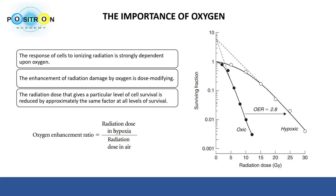As you can see in this graph, there is a plot between surviving fraction and radiation dose. For hypoxic cells the curve looks shallower, while for oxic cells the curve is much steeper. We can see that treating hypoxic cells requires higher radiation doses, whereas treating oxic cells requires lower radiation doses. The presence of oxygen enhances cell killing, and the enhancement of radiation damage by oxygen is dose-modifying.